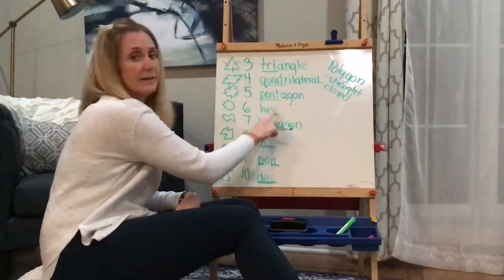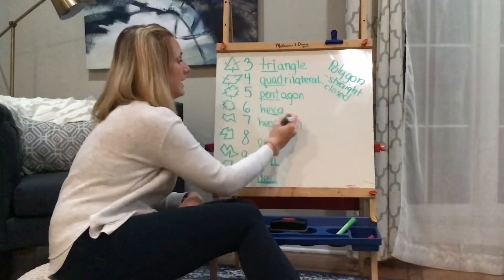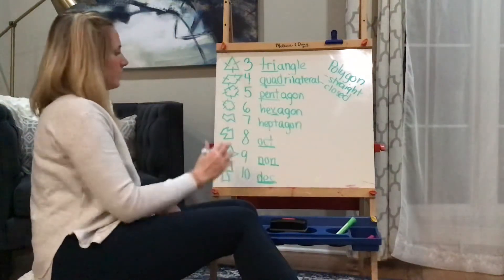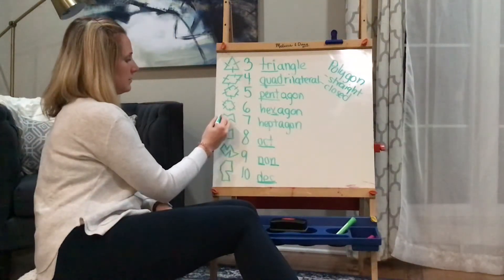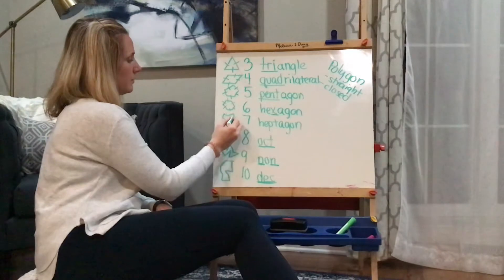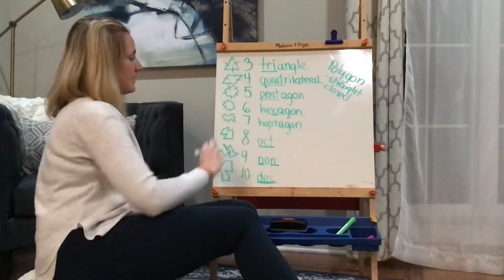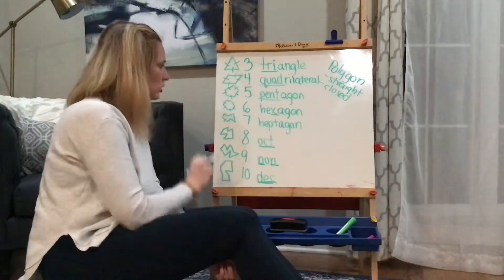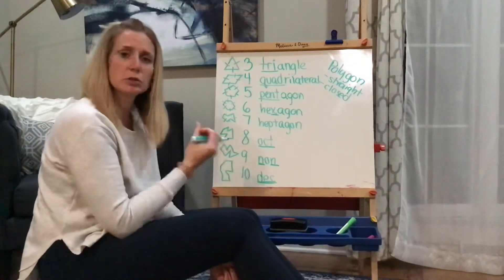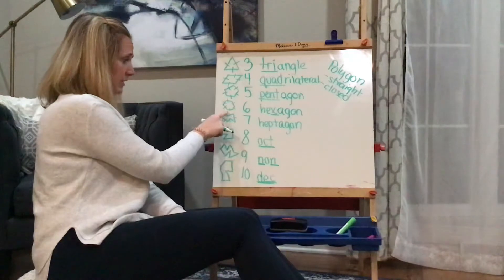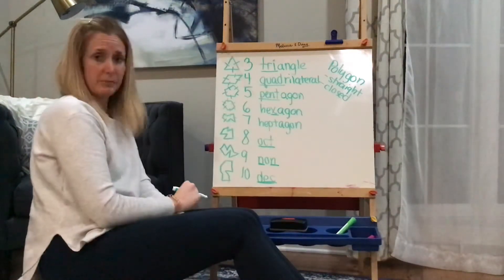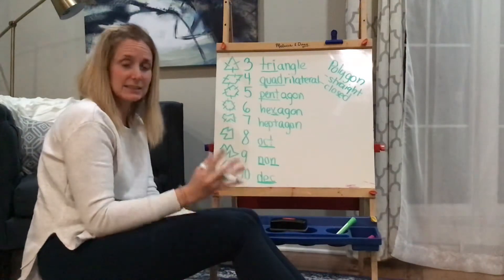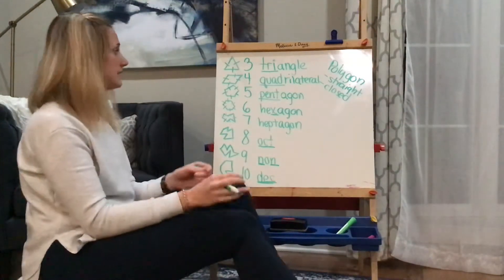Count the number of sides: one, two, three, four, five, six, seven. Now if you remember in the last video, I said it doesn't always have to look like the shape that you're used to it looking like. Like a hexagon doesn't always look like this, it could look funky like this, but as long as it has six sides, it's still a hexagon. It doesn't have to look exactly like you're used to seeing it.